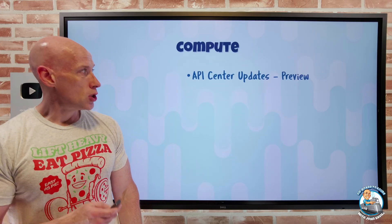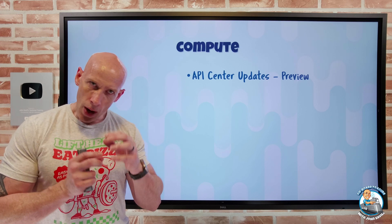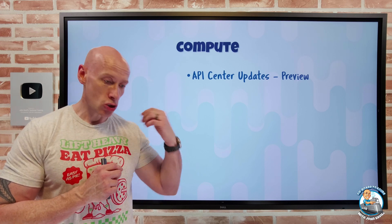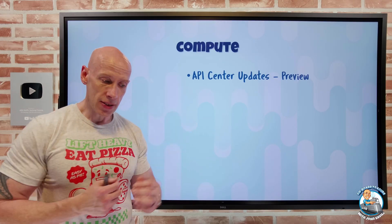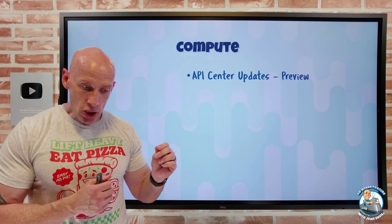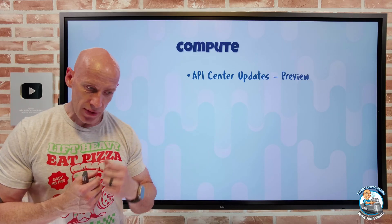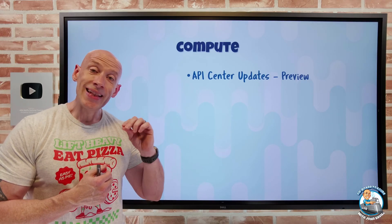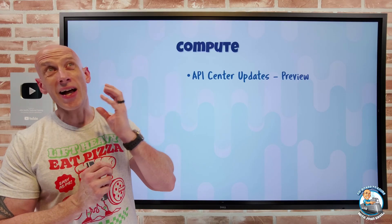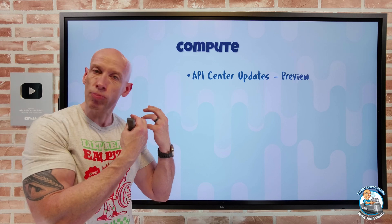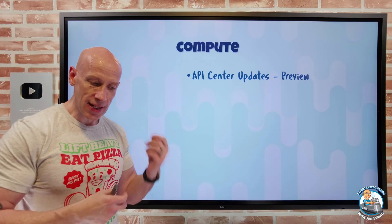On to what's new. On the compute side, there have been some API Center updates. API Center is all about providing a central hub for API registrations, inventory, management, governance, and discovery. There's now a VS Code extension, making it easier than ever to register APIs. We also now have linting output — that automated checking of code syntax, stylistic errors, and programmatic errors for a specific language.